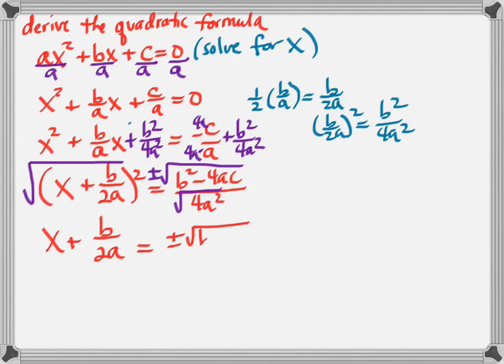So simplifying that, I get x plus b over 2a. And then on the right-hand side, the top doesn't simplify at all. It's still plus or minus the square root of b squared minus 4ac. But the denominator is a perfect square, so it's just 2a.